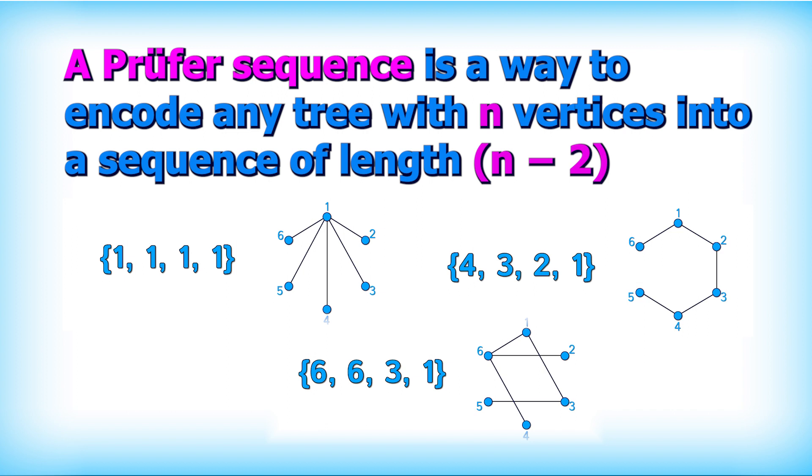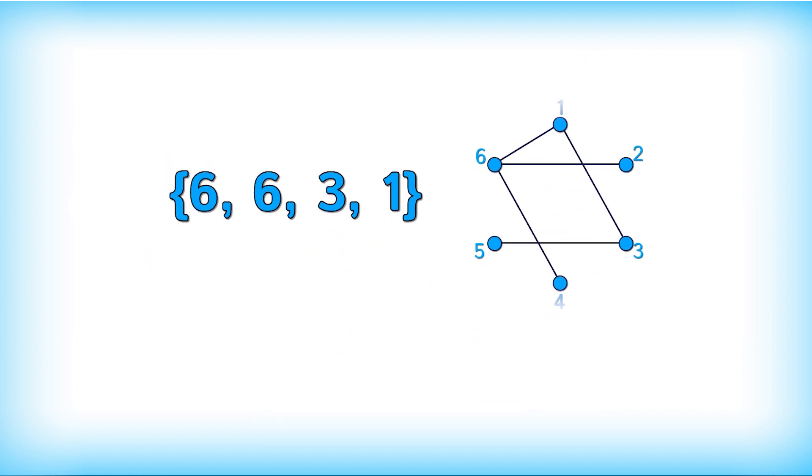There's actually a surprisingly simple algorithm to go from tree to proof of sequence. And we'll use this example, this tree with proof of sequence 6, 6, 3, 1 to demonstrate it.